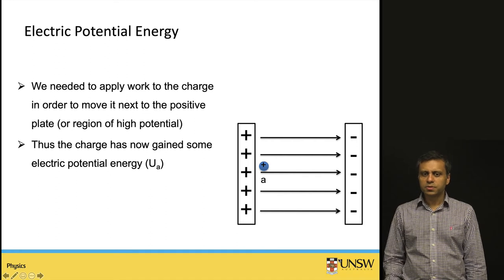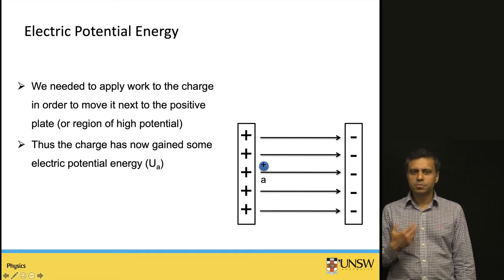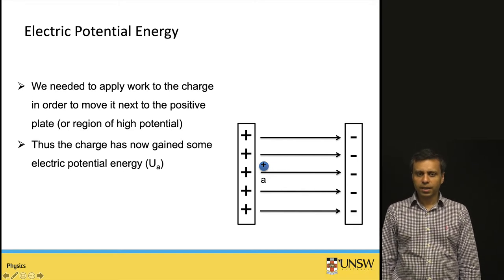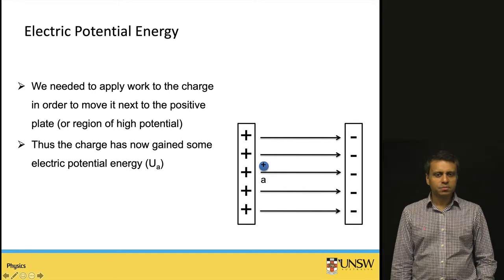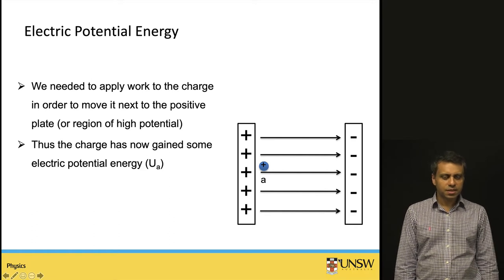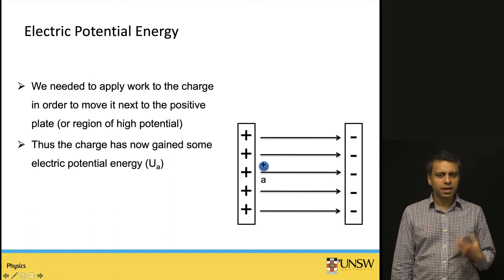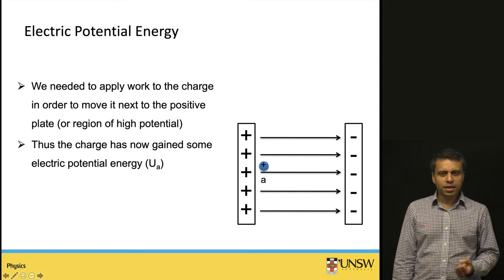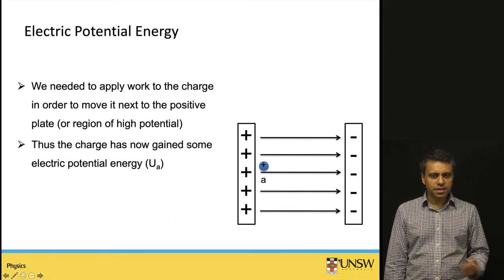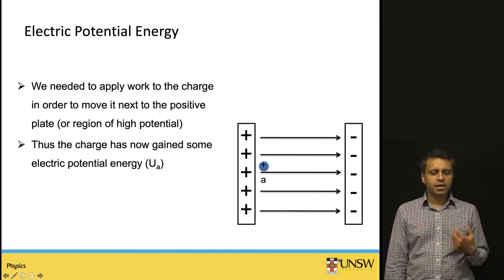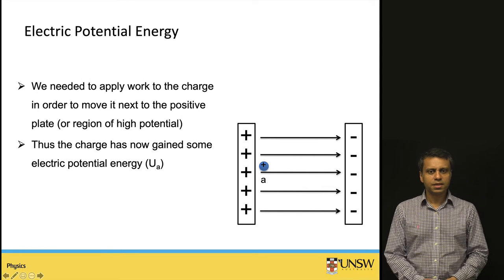Initially, when the charge was close to the positive plate, it has the highest potential energy, U at position A. As it moves to the right, its velocity increases and that potential energy converts into kinetic energy. The potential energy decreases but kinetic energy increases, while total energy remains constant — that is where conservation of energy comes into play.